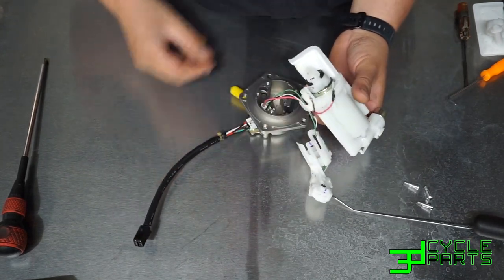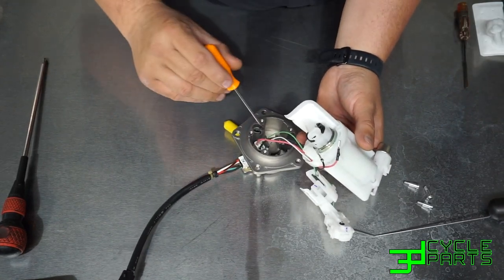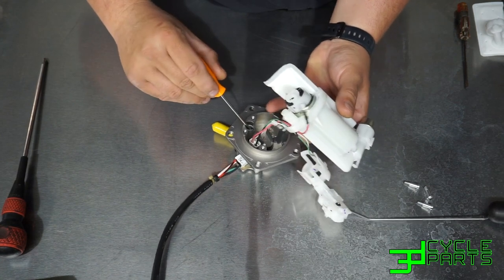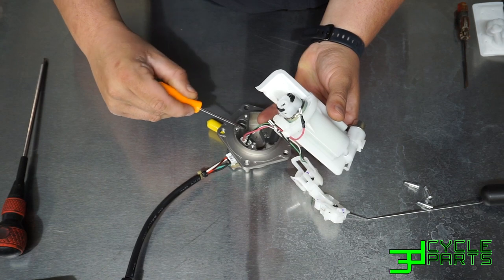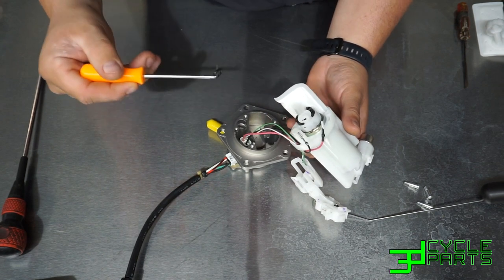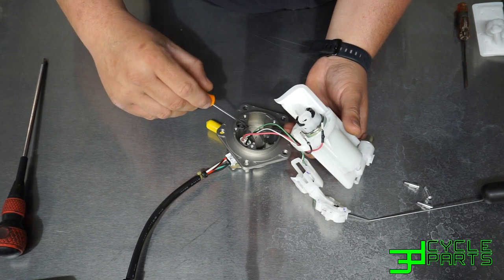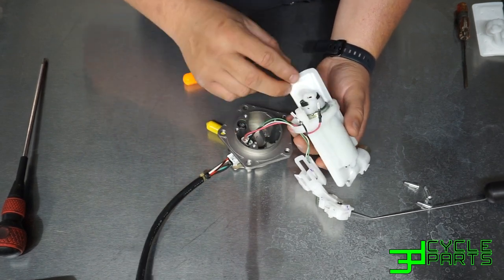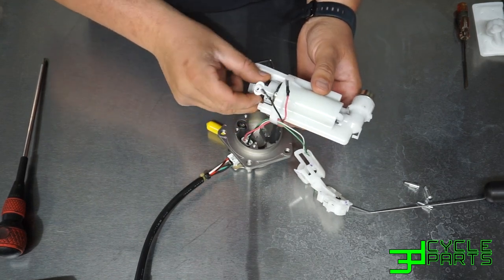Once you pull that loose, be careful, there's an o-ring on each end of the pump. Sometimes, in this case it did what I want it to do, it stayed down in that bore of the aluminum housing. Sometimes it possibly could come off and stay on this part of the plastic housing and then fall off on you. We don't want that.